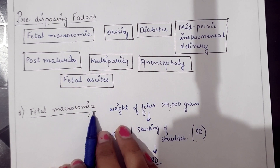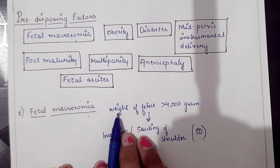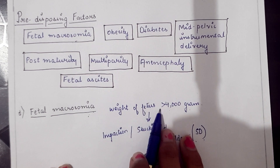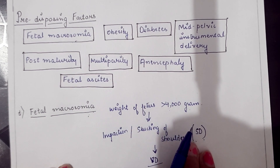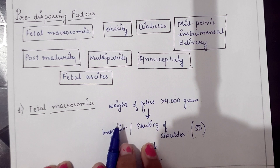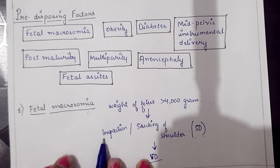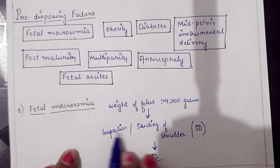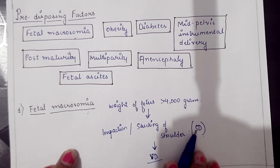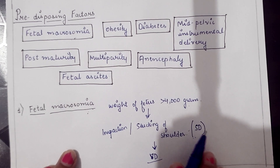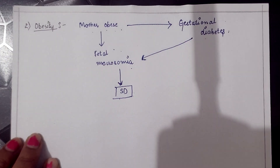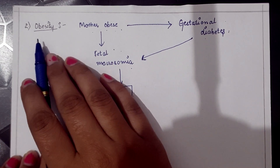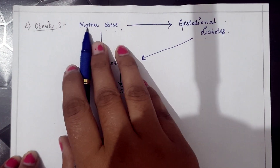Fetal macrosomia is a condition when the fetus is much larger than normal, or when the fetal weight is more than 4000 grams. When the fetus is much larger, there are chances of impaction or sticking of the shoulder during vaginal delivery, which is the condition known as shoulder dystocia.